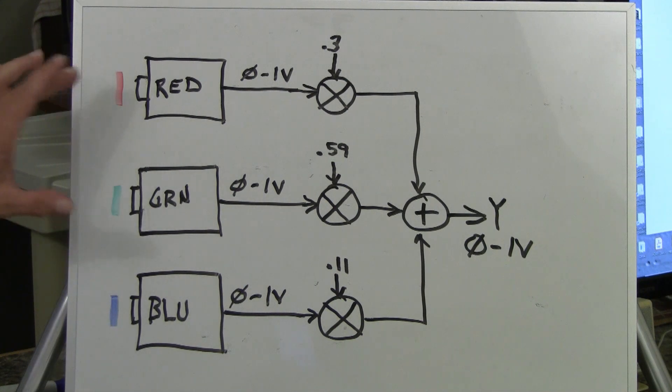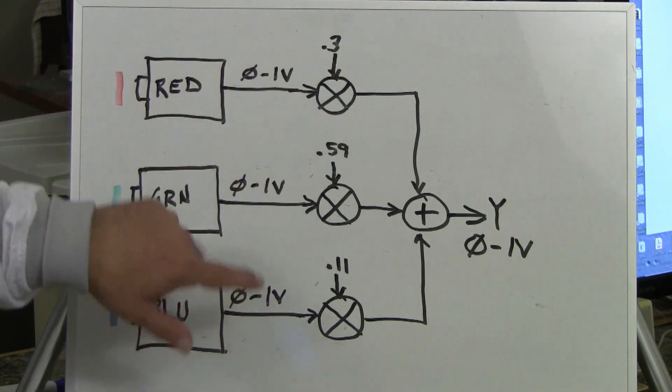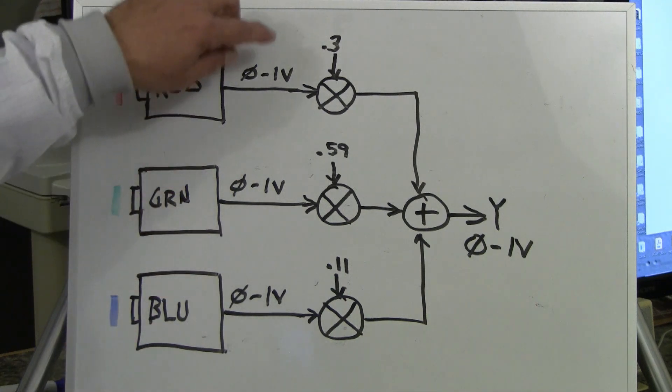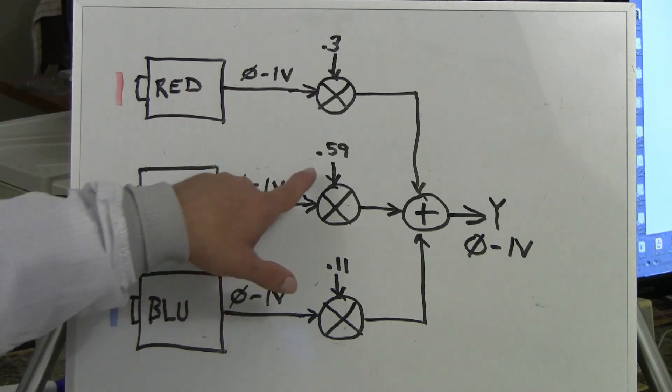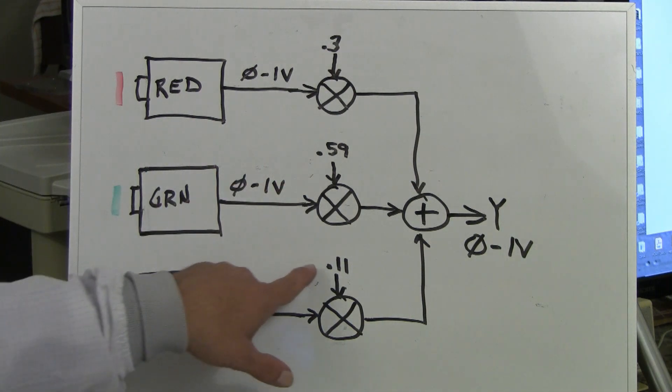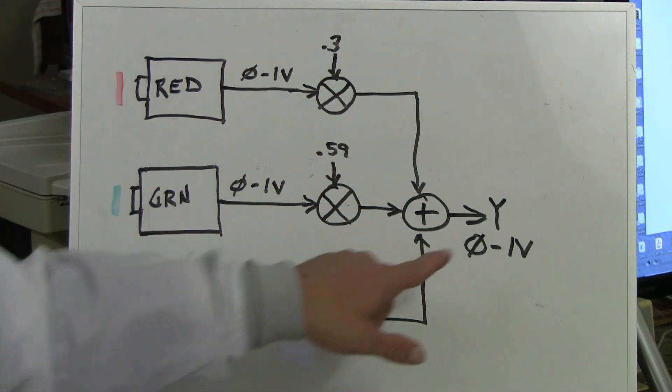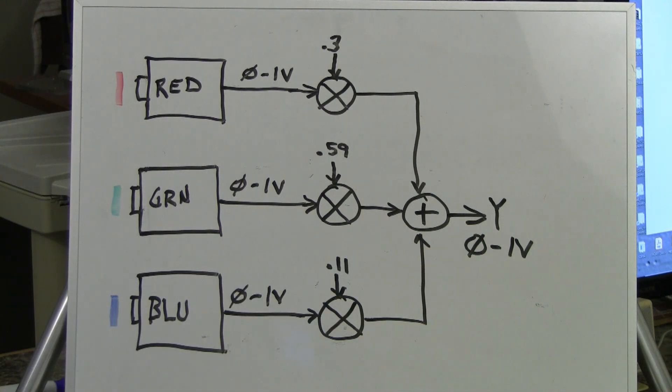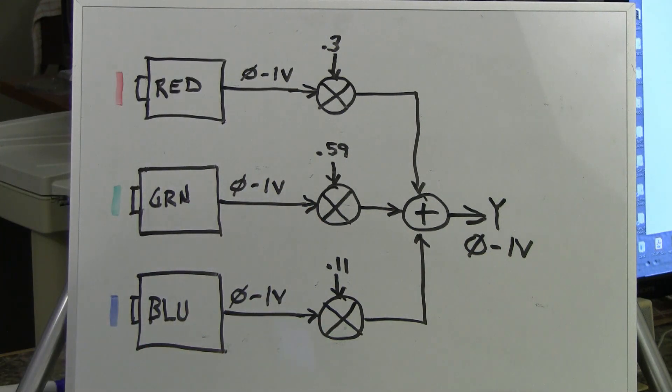Now, to take these three signals and create the equivalent of the black and white signal, we scale them. That is, we multiply them by a fraction. And these were worked out to represent white light to the human eye. We take the red signal and multiply it by 0.3, and we take the green signal and multiply it by 0.59, and we take the blue signal and multiply it by 0.11. We add the three signals together to generate the black and white signal called Y, which again has returned to a level of one volt, zero to one volt. If you'll note, these coefficients add up to one. So, that is how the luminance signal is created.